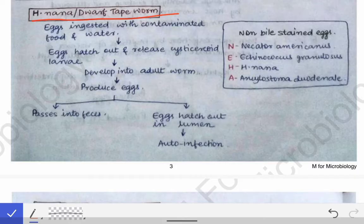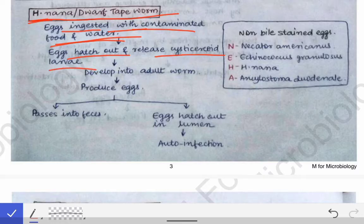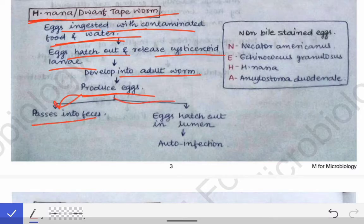In the case of Hymenolepis nana, the life cycle is as follows: the eggs are ingested with contaminated food and water. These eggs hatch out and release the cysticercoid larva in the body. That larva develops into the adult worm, which then produces eggs. Those eggs pass into the feces and also hatch out in the lumen, thereby causing auto-infection.